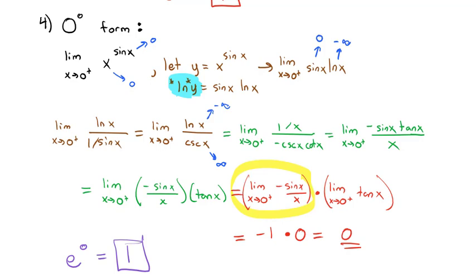So that's L'Hôpital's Rule: if we have an indeterminate form like 0/0 or ∞/∞ at a limit, we take the derivative of the numerator and denominator. If it's not in one of those forms, we massage the problem — by moving a piece to the denominator, combining fractions, or using logarithmic substitution — to put it into a usable indeterminate form. Practice these and we will discuss them more in class.